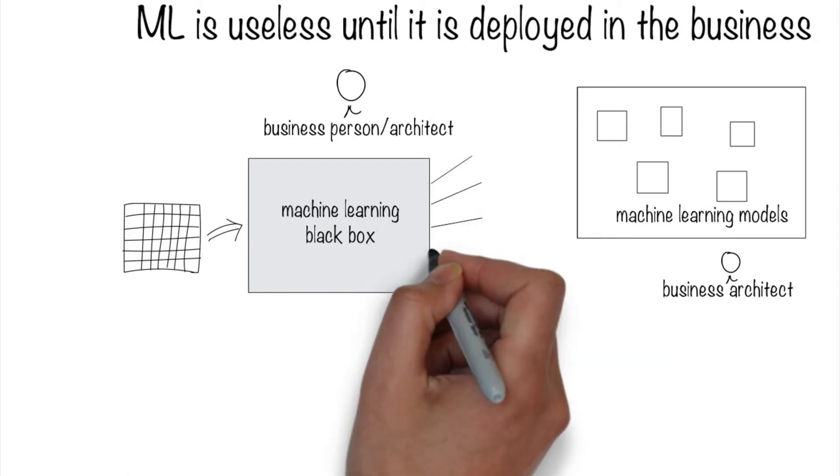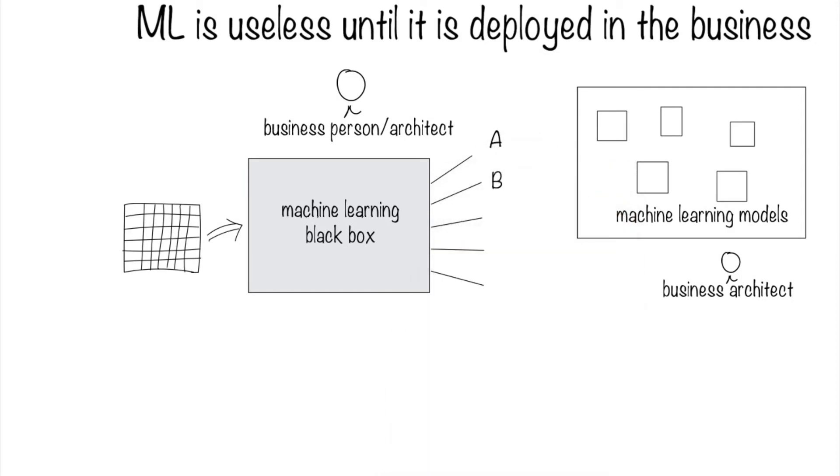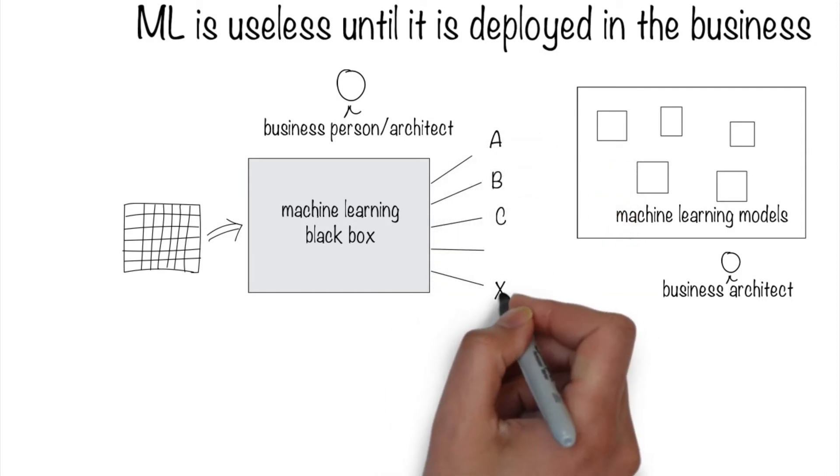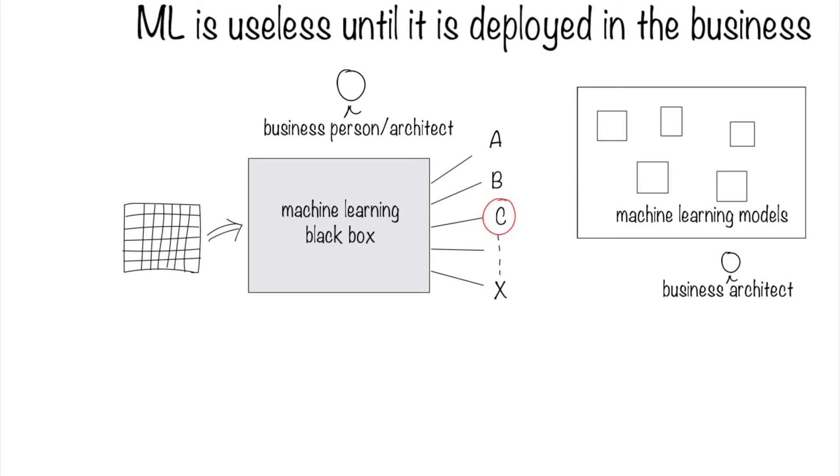The black box will spit out an answer as to which algorithm you should use for your particular problem, among many, based on the characteristics of the data.